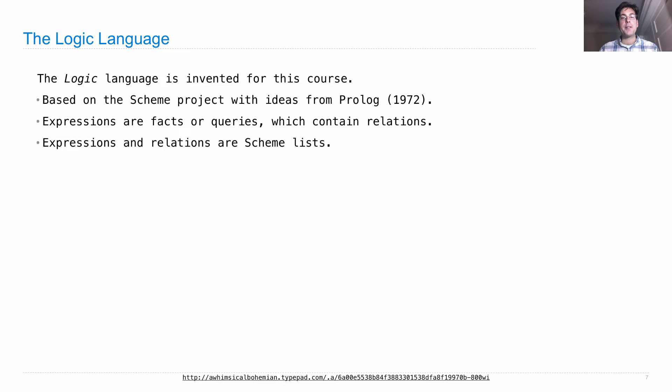Expressions and their relations are just Scheme lists which contain Scheme symbols. For example, we'll have something like 'likes John dogs' - this is a Scheme list but also a relation in the Logic language that tells me that John likes dogs. A typical way to state a relation is to describe how some things are related first, and then write down the symbols that are related. The order does matter.